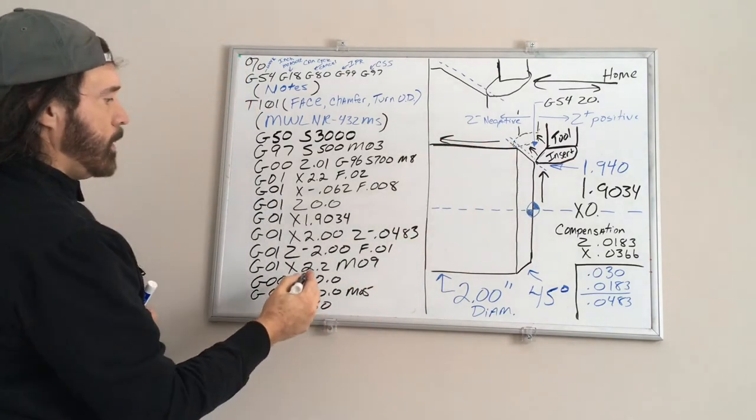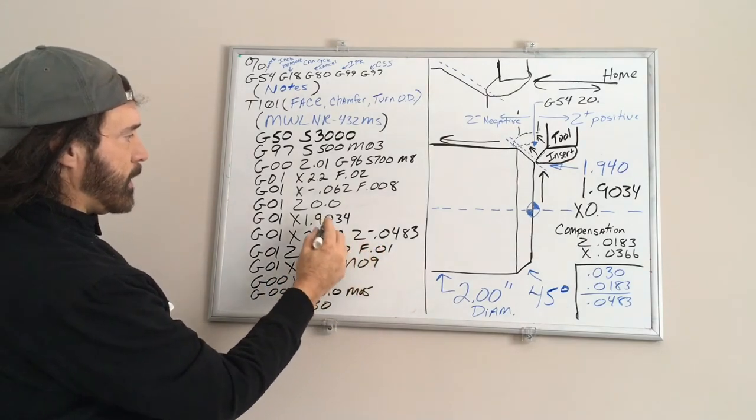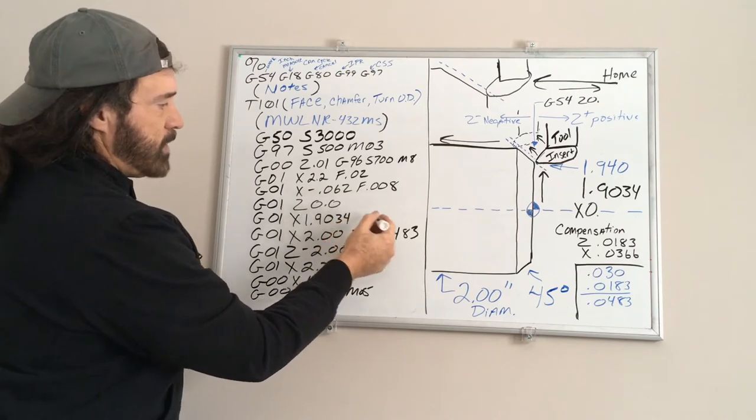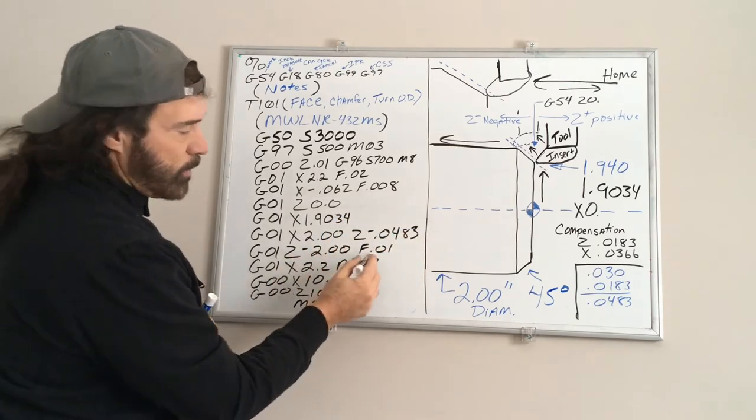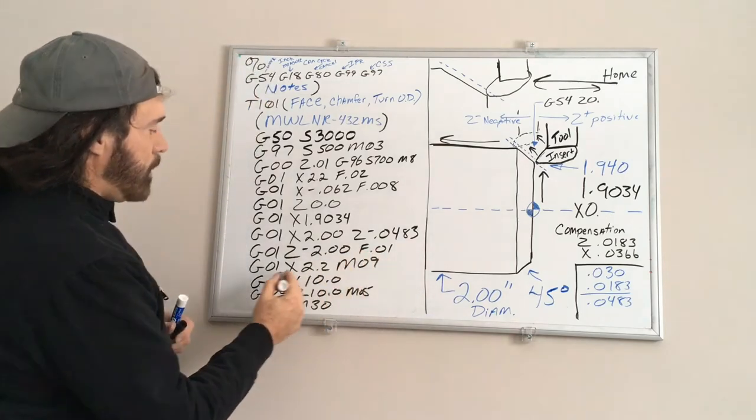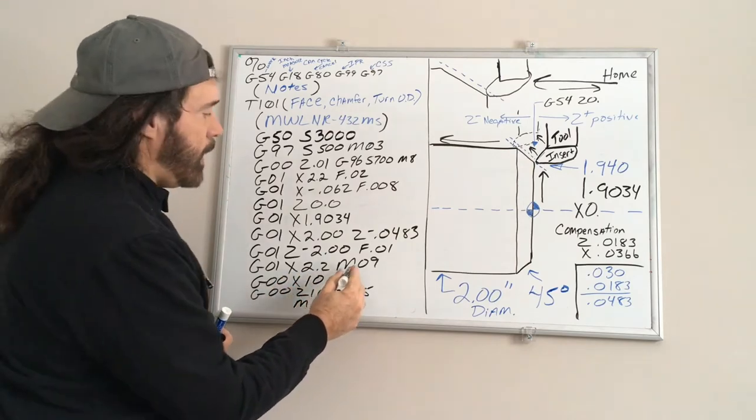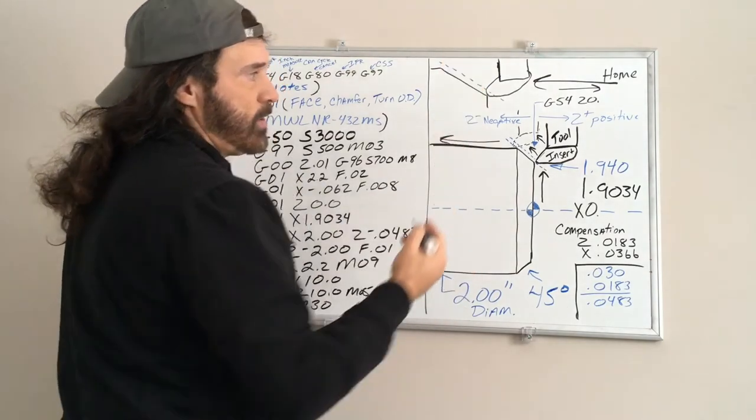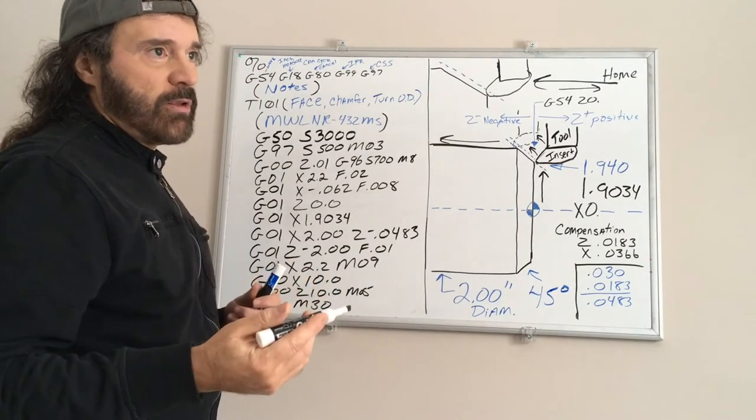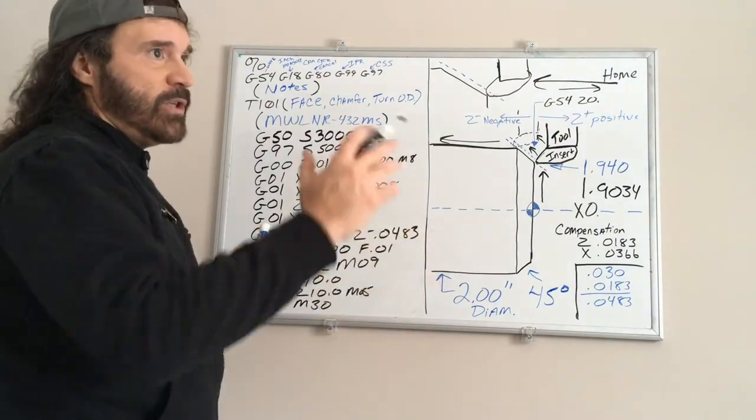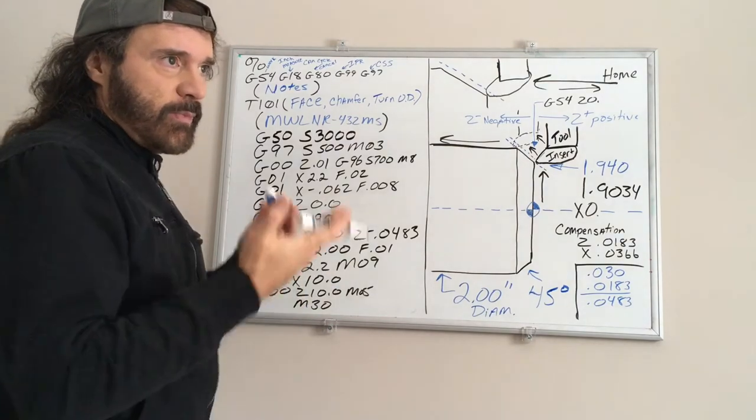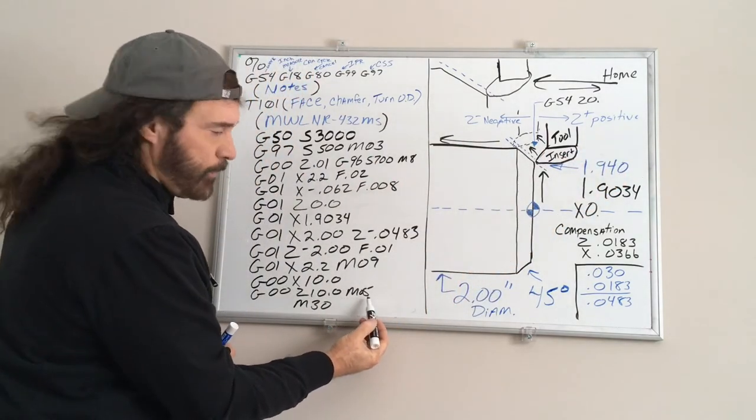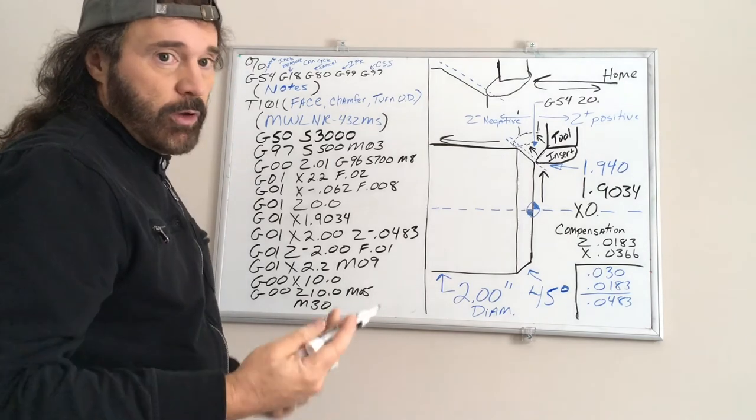I didn't add any other feed rates, I'm staying pretty consistent at 8 thousandths and just let that stay the same all the way through. Then when it gets to Z negative 2.0 just 10 thousandths, just a little faster. Then I'm going to feed up to a dimension of X2.2, have the coolant turn off M09, then I'm just going to have a rapid up to X10.0 which theoretically means 10 inches from spindle centerline. It may not be all the way home or it may be over traveled, for now that's just in there to get it out of the way. Then I'm going to have it go back 10 inches that way, have the spindle turn off M05, and put an M30 code when you're done.